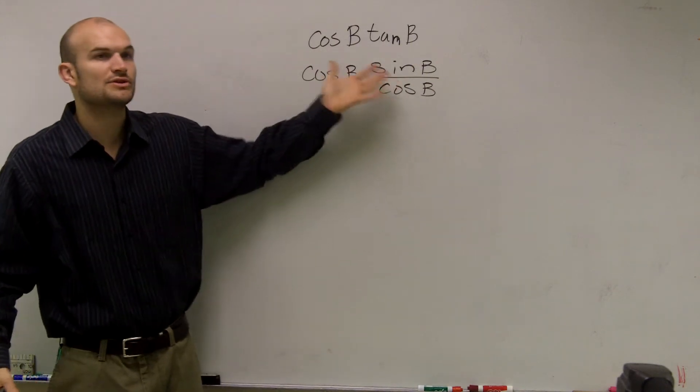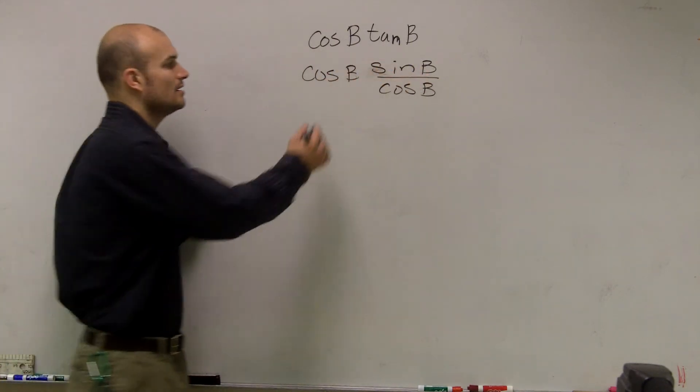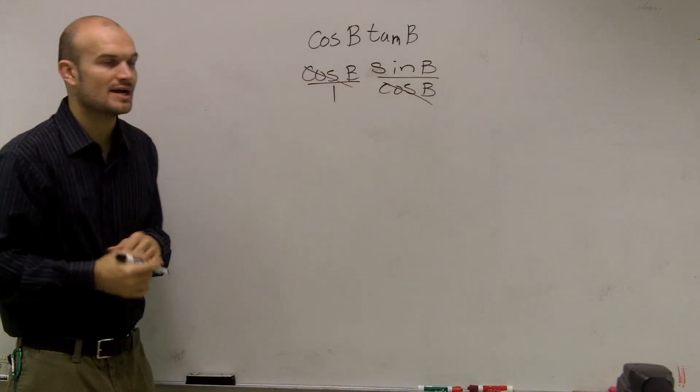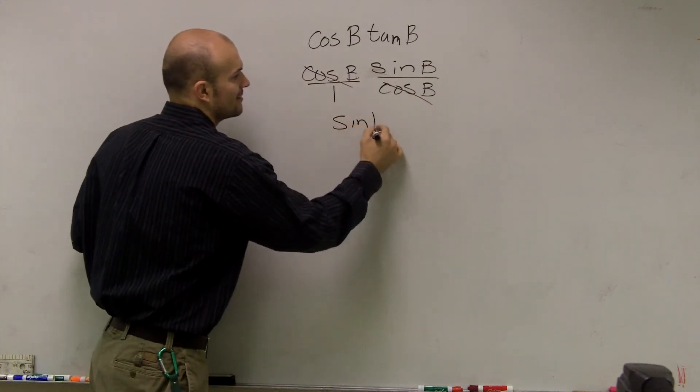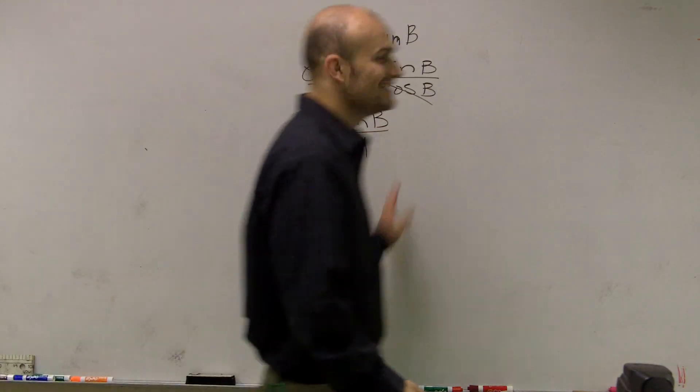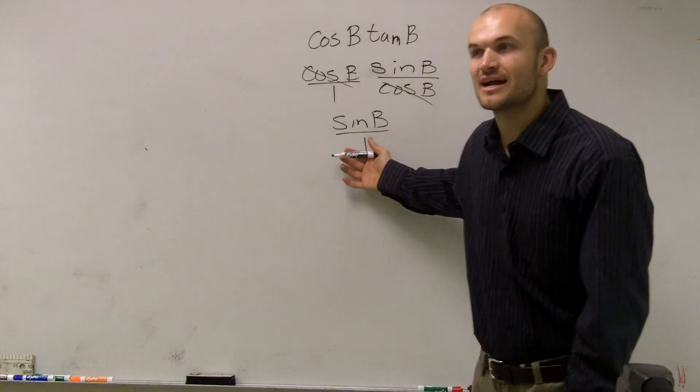And the reason why I do this is because when you change things to sine over cosine, you can now cross out the cosines, leaving me with sine of B over 1. So therefore, it's just going to be sine of B.